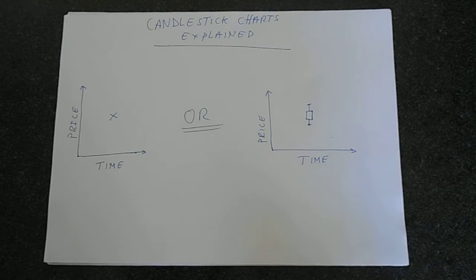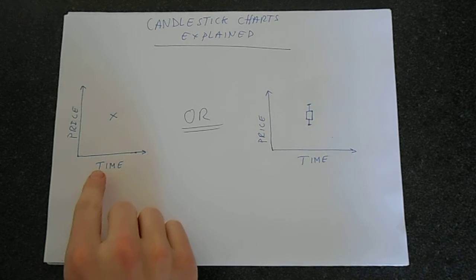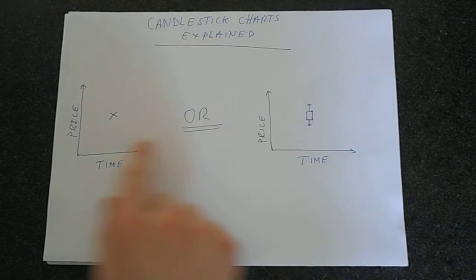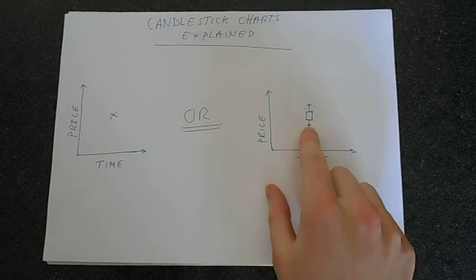So fundamentally, a candlestick chart tells you a lot more information. For example, we could have a stock price chart, so you've got time going along there and price, and we could just mark an X at the price at that time, or we could use something a bit more sophisticated.